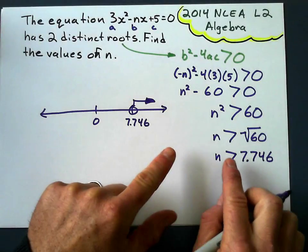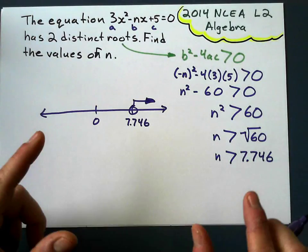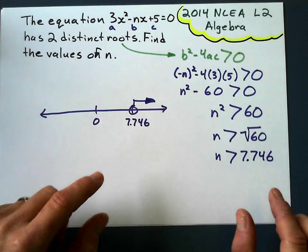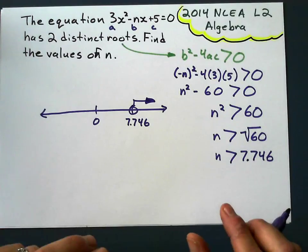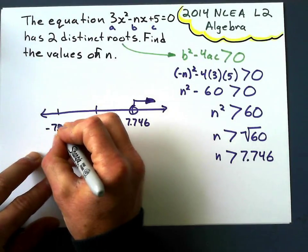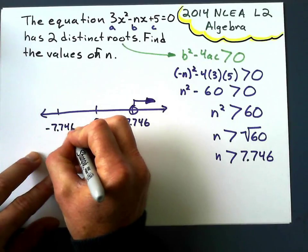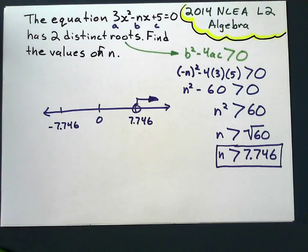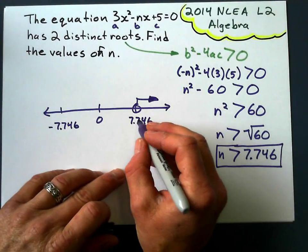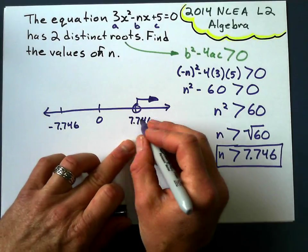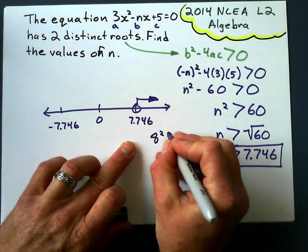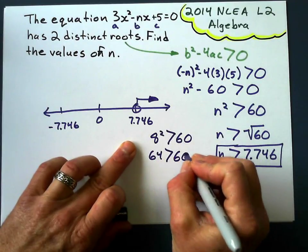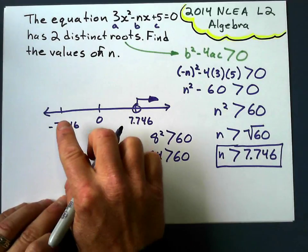Okay, but don't forget, when we square root something, we've got negative sides too. We've got the negative, because negative 7.746 squared equals 60 as well. However, let's just put negative 7.746 right here. Here's the tricky part. Let me just emphasize this one more. Anything greater than this, like 8, say 8. Well, 8² is greater than 60, because 64 is greater than 60. Okay, we can understand that.